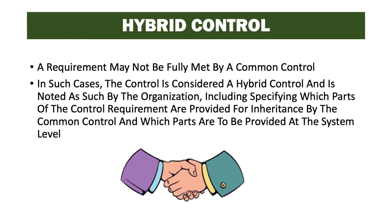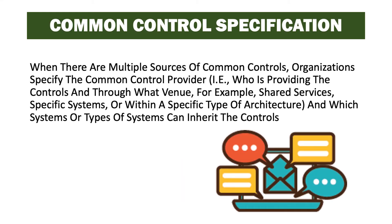Hybrid controls are an example where a control is partially implemented by the common control provider and partially implemented by the system owner, as the requirement may not fully meet a common control. In such cases, the control is considered a hybrid control and is noted as such by the organization, including specifying which parts are provided for inheritance by the common control provider and which parts are provided at the system level. An example is where a common control provider may provide continuity of operations or COOP plans and COOP training for system owners, but the system owner is responsible for implementing the plan and having their people participate in the training.